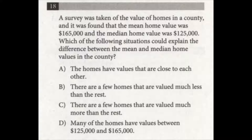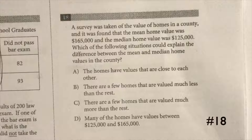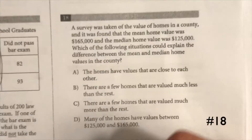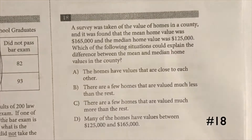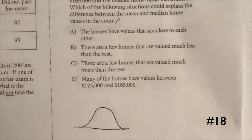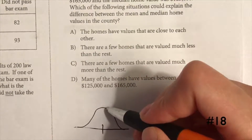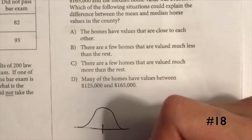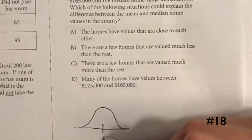Question 18 reads: a survey was taken of the value of homes in a county and it was found that the mean home value was $165,000 and the median home value was $125,000. Which of the following situations could explain the difference between the mean and median home values? For a symmetrical distribution, the mean and median values should be the same. If the distribution looks like a normal distribution and it's symmetrical, then the mean and the median — the 50th percentile — would both be at the same place.